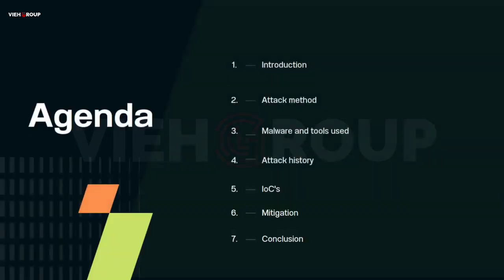These are the topics we're going to cover today: first, the introduction to APT10 — what it is, where it started, when it started, and the current scenario. Then we'll cover the attack methods used by APT10, the malware and tools widely used in their campaigns, some famous attack history, IOCs (indicators of compromise), how we can mitigate this specific threat group, and finally the conclusion.